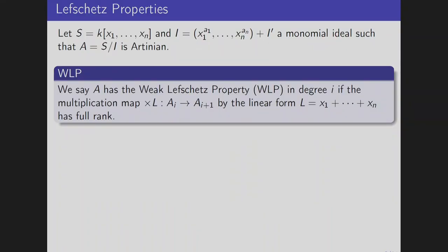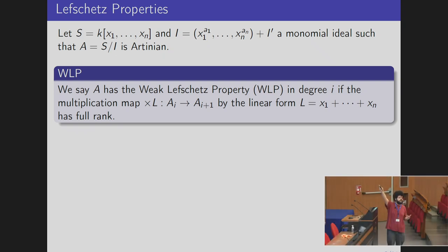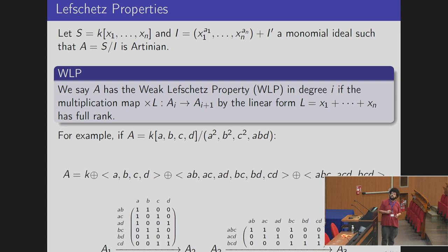This is not the most general definition — you can define it for essentially any ideal. The difference is that instead of this linear form you need a general linear form, but for monomial ideals we can use this one.